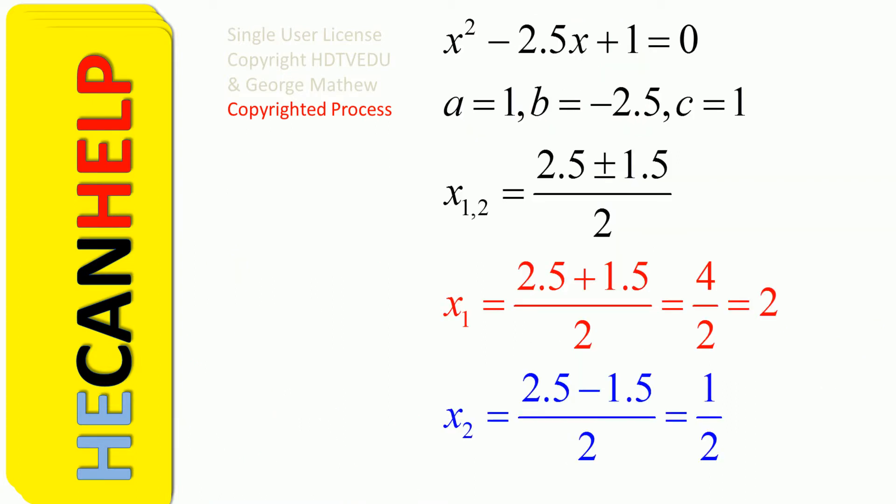So that's what I did here. 2.5 plus 1.5 divided by 2, let's call that x1. What is 2.5 plus 1.5? 4. 4 divided by 2 is 2. How about 2.5 minus 1.5? That's just 1, and 1 divided by 2 is just 1 half, which equals 0.5.